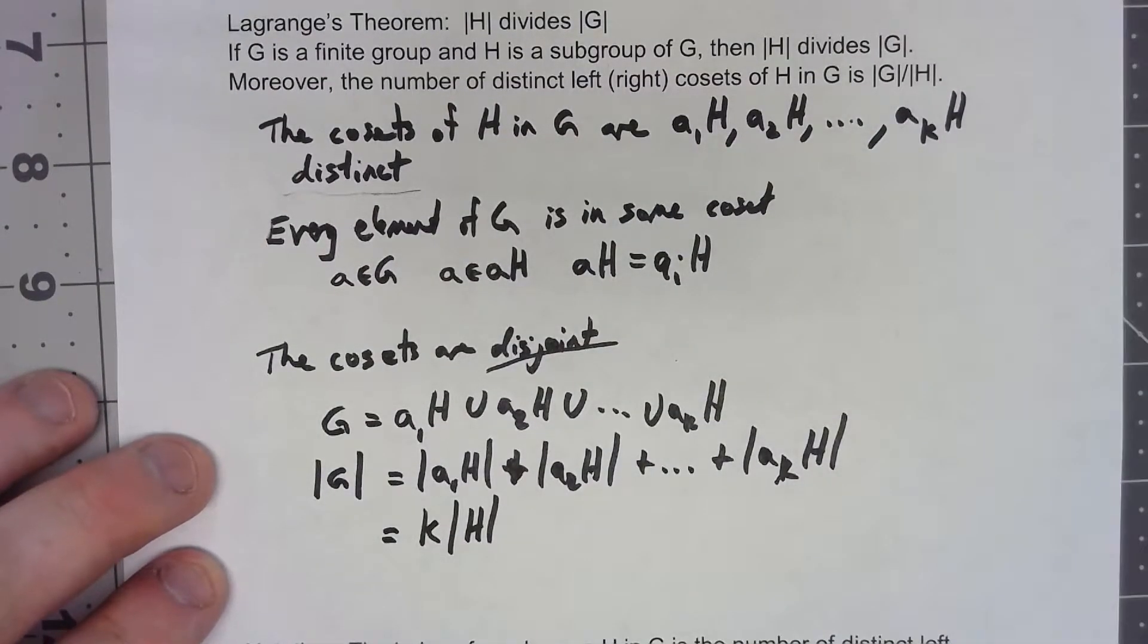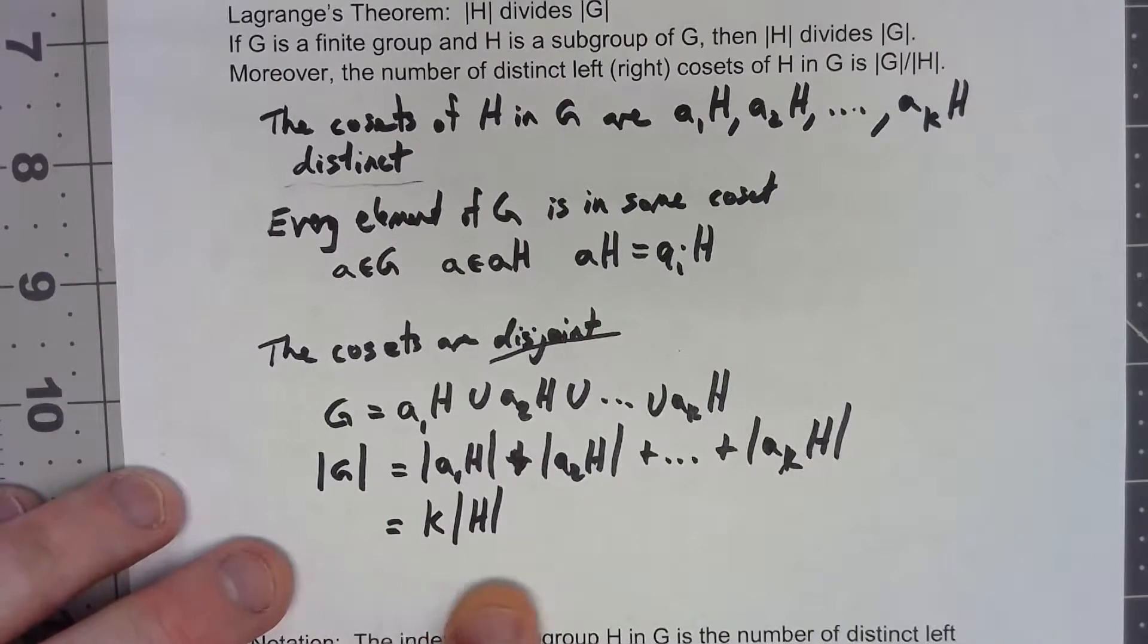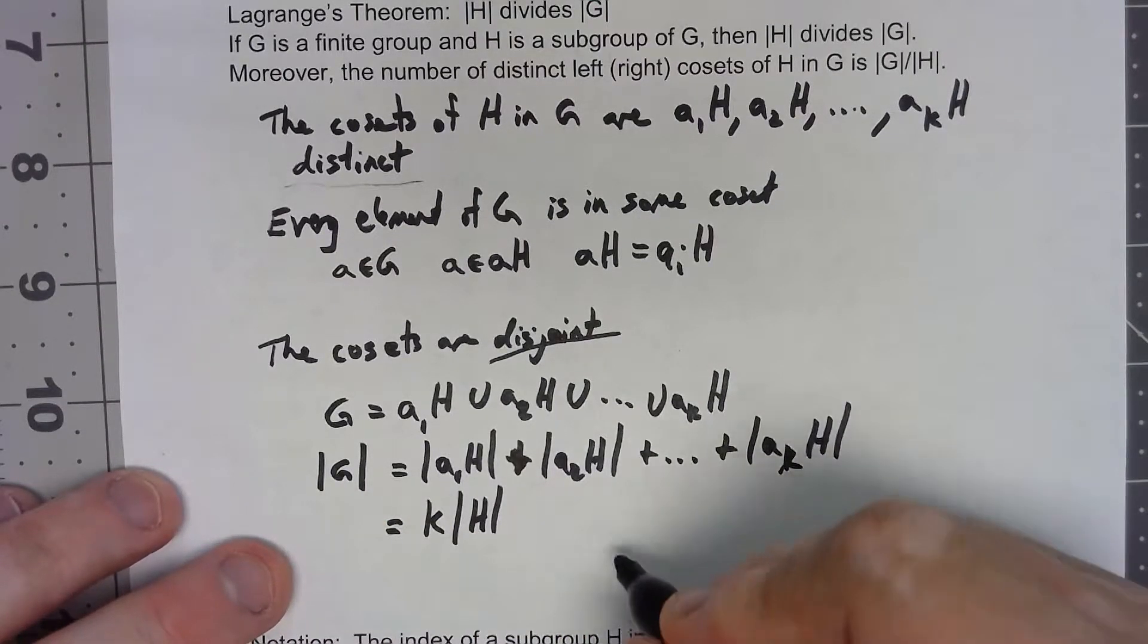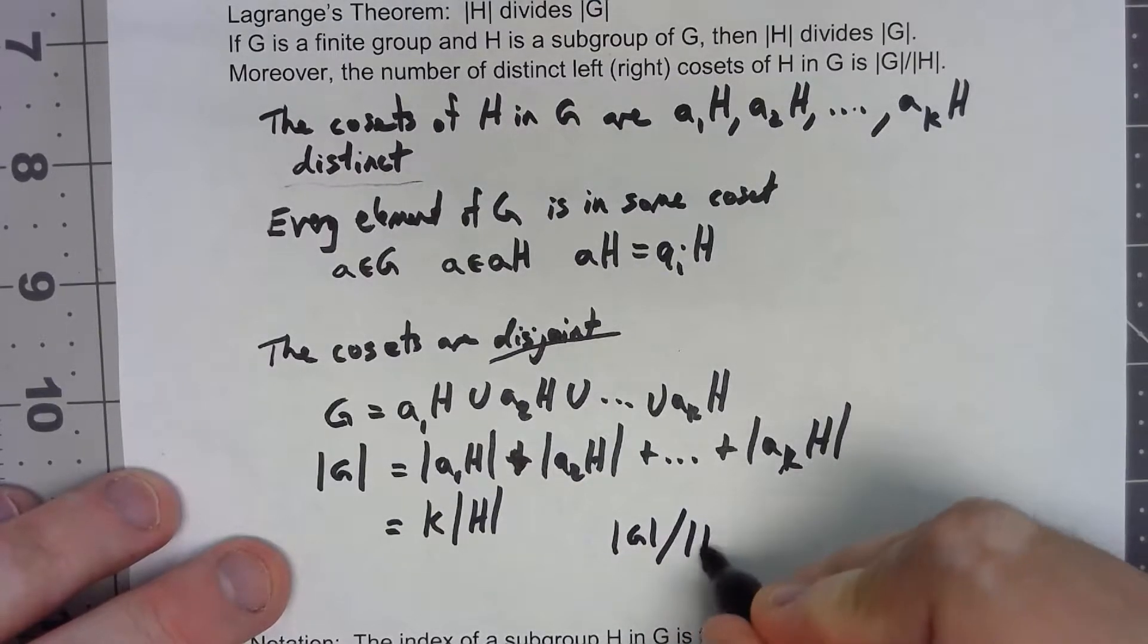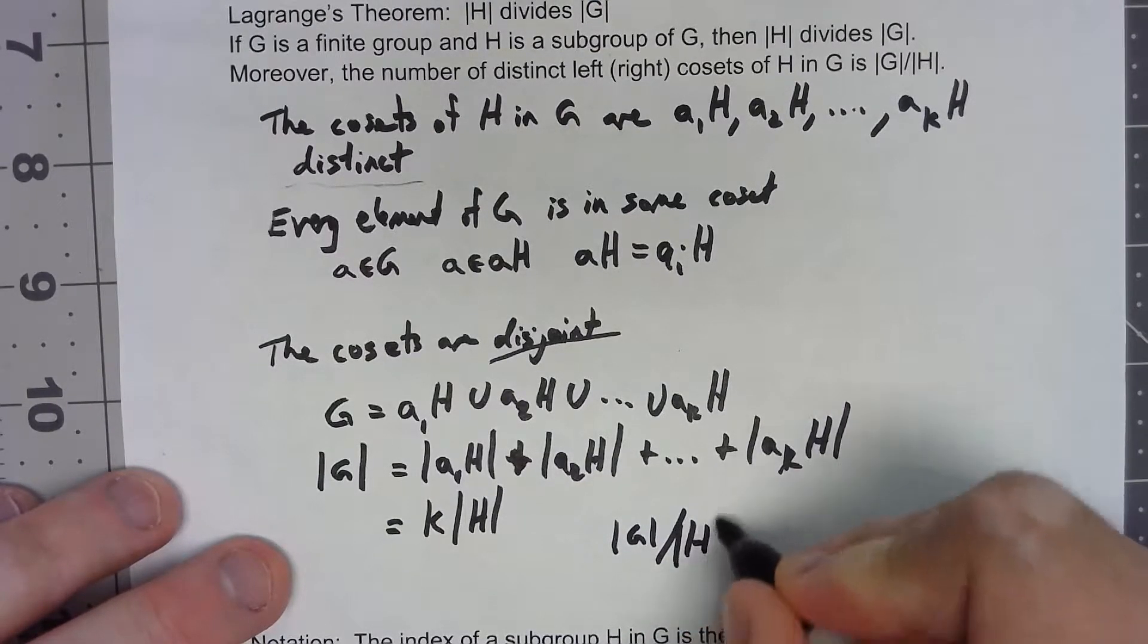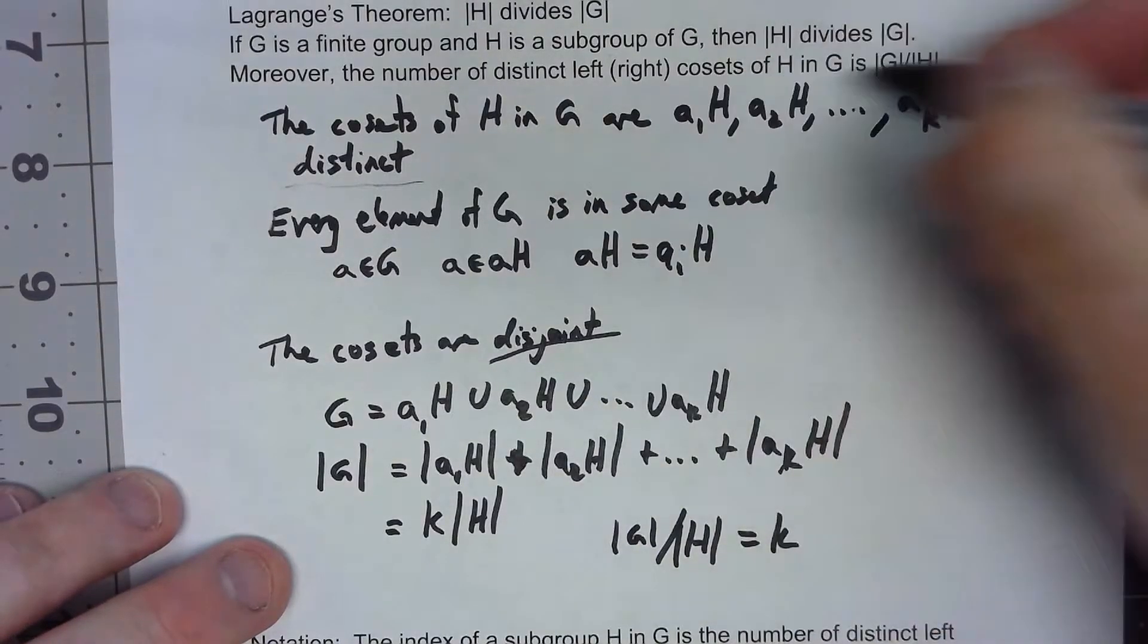But we can even take this one step further. If I just divide by the order of H, the order of G over the order of H has to equal k, but k was the number of cosets.